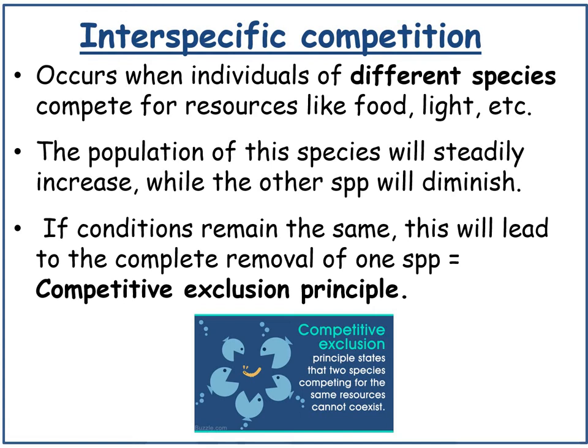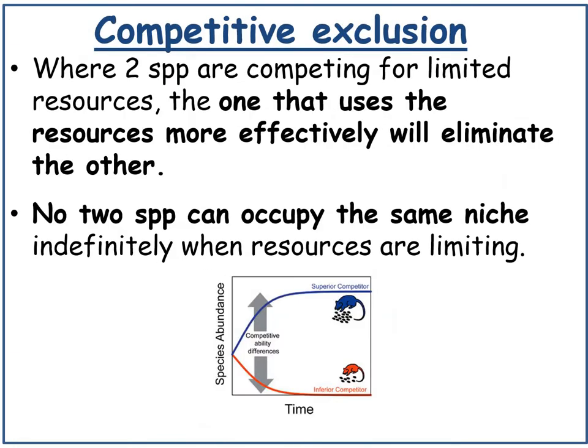Interspecific competition occurs when individuals of different species compete for resources like food or light. The population of one species will steadily increase while the other diminishes, and if conditions remain the same, this leads to the complete removal of one species — known as the competitive exclusion principle. This principle states that two species competing for the same resources cannot ultimately co-exist, and no two species can occupy the same niche indefinitely when resources are limiting.